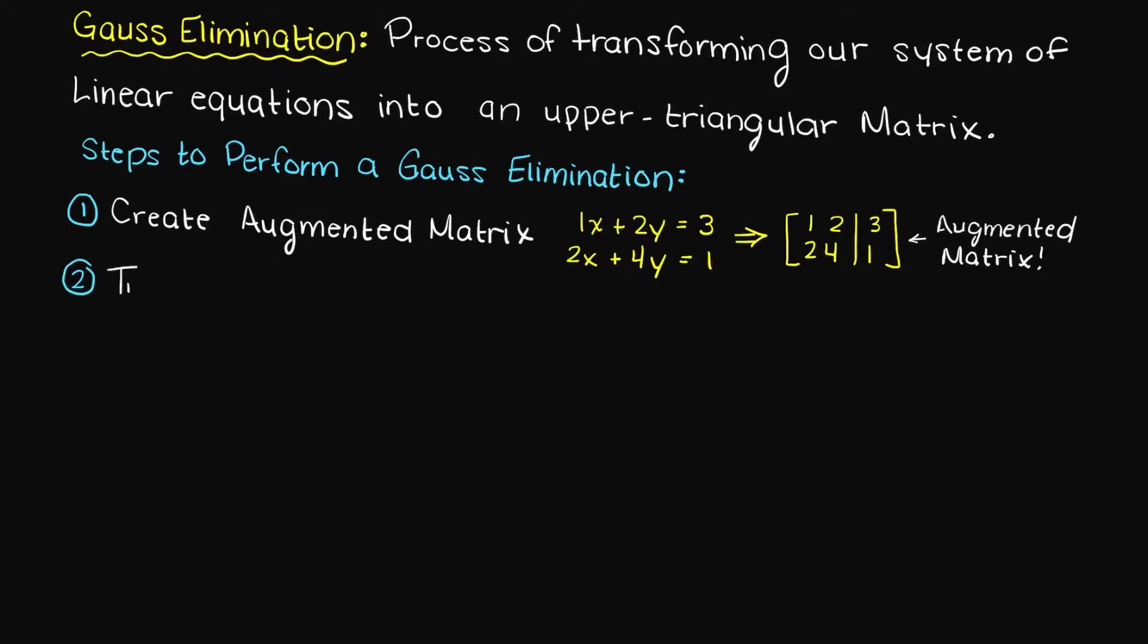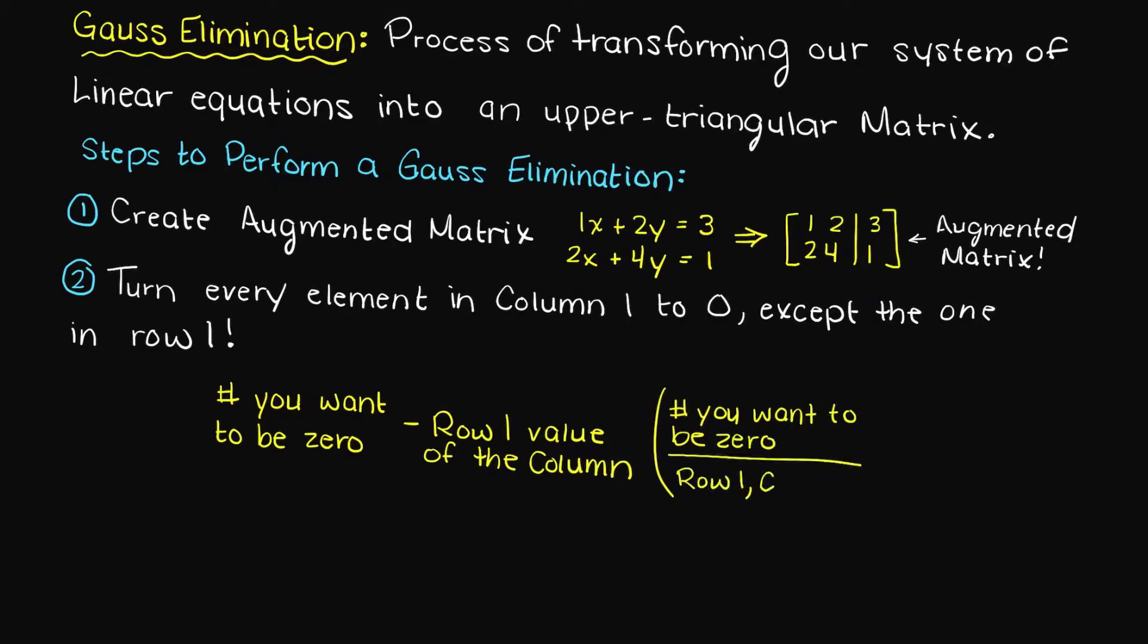Step 2: For every row in the first column except the top one, turn each element to 0 by subtracting row 1 times the scaling factor from it. The scaling factor is simply the element you want to turn to 0 for that row divided by the only value that will not be a 0 in that column.